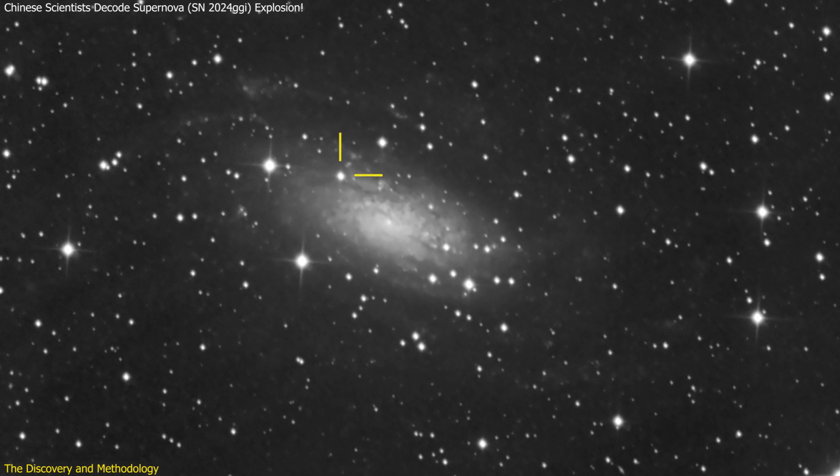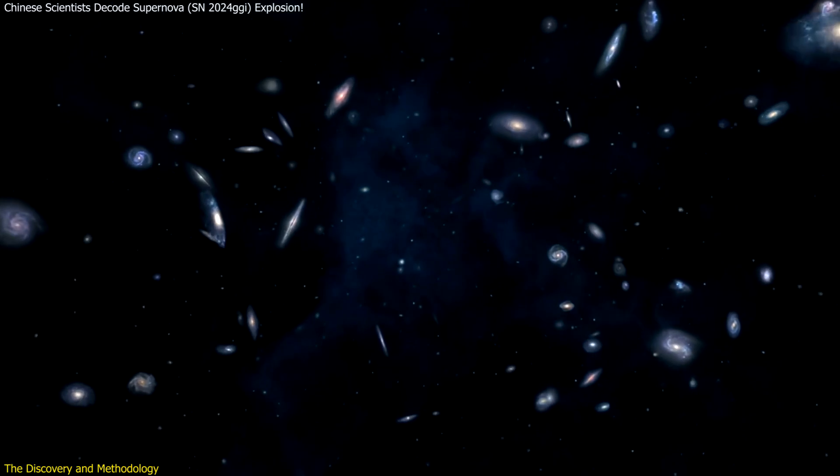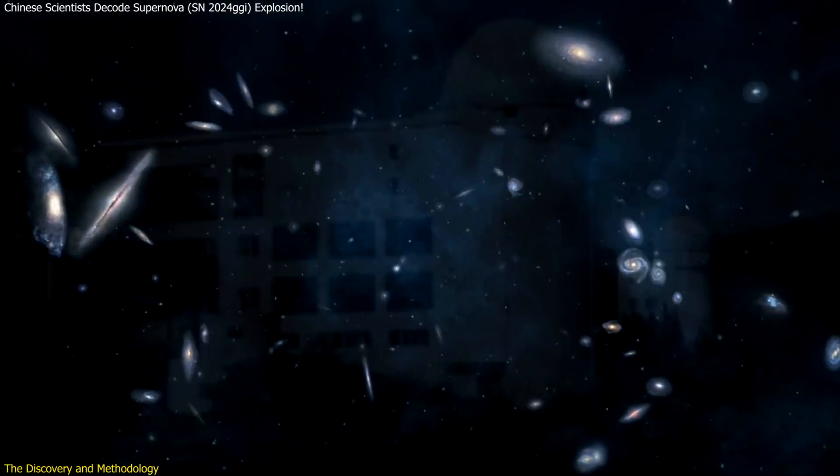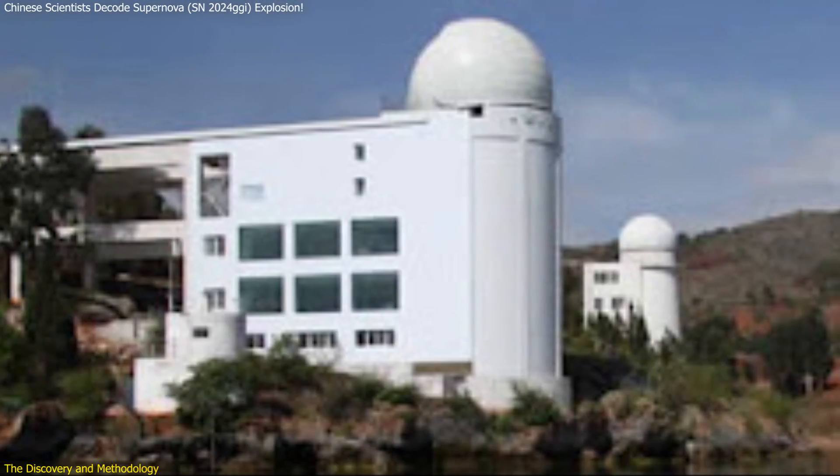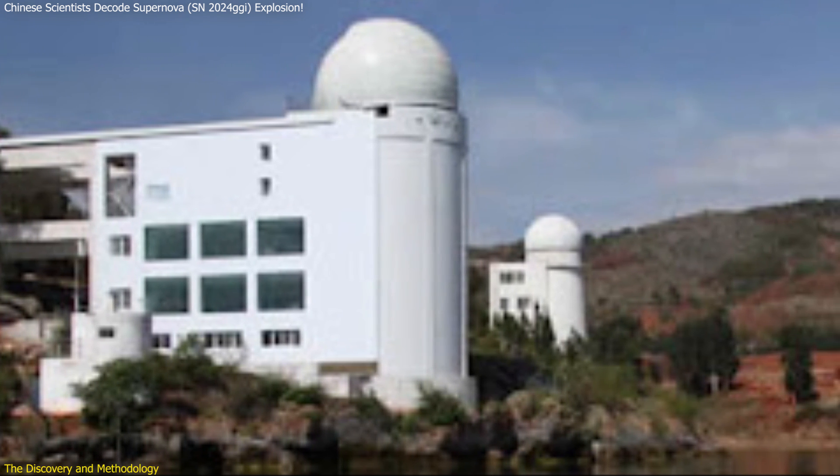The supernova in question, designated SN 2024 GGI, is located approximately 20 million light-years from Earth. This extraordinary event was captured by a team of researchers at the Yunnan Observatories under the Chinese Academy of Sciences.